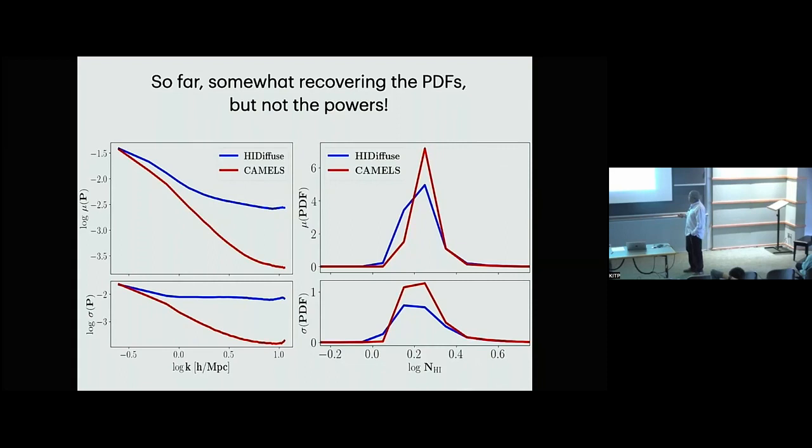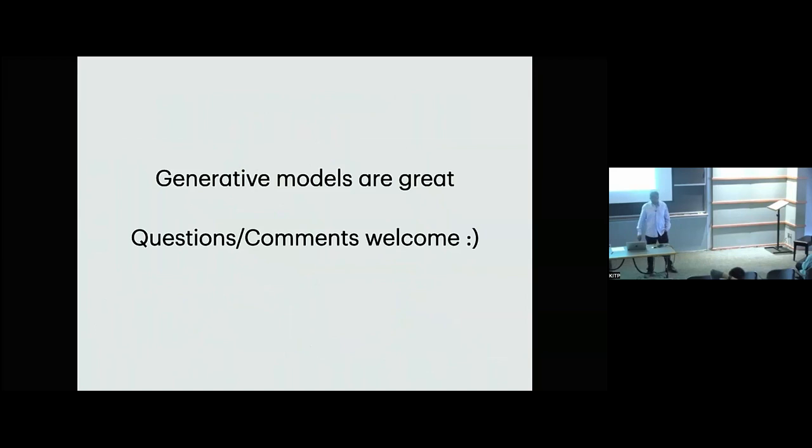People talk about the PDF being more sensitive to the skewness of the field and capturing higher-order statistics, while the power spectrum should be easier to recover — but I don't know why I'm seeing this behavior. I'm just experimenting; that's the great thing about this workshop — I started 10 days ago. Thank you very much.